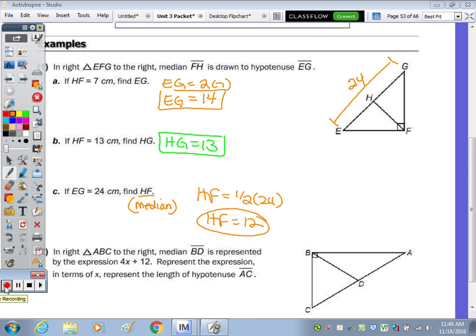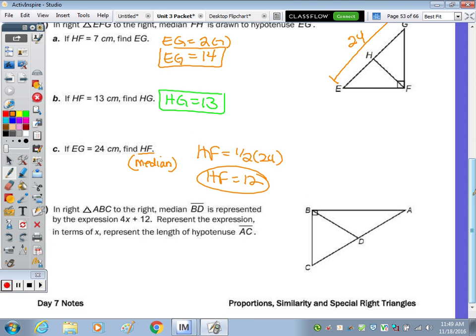In number two it says we have right triangle ABC to the right. Median BD is represented by the expression four X plus twelve. So it's algebraic. Represent the expression in terms of X for the hypotenuse AC. So this is what we're trying to find, the length with an X in it. It's good to write down the relationship, the hypotenuse, and then substitute is two times the median.